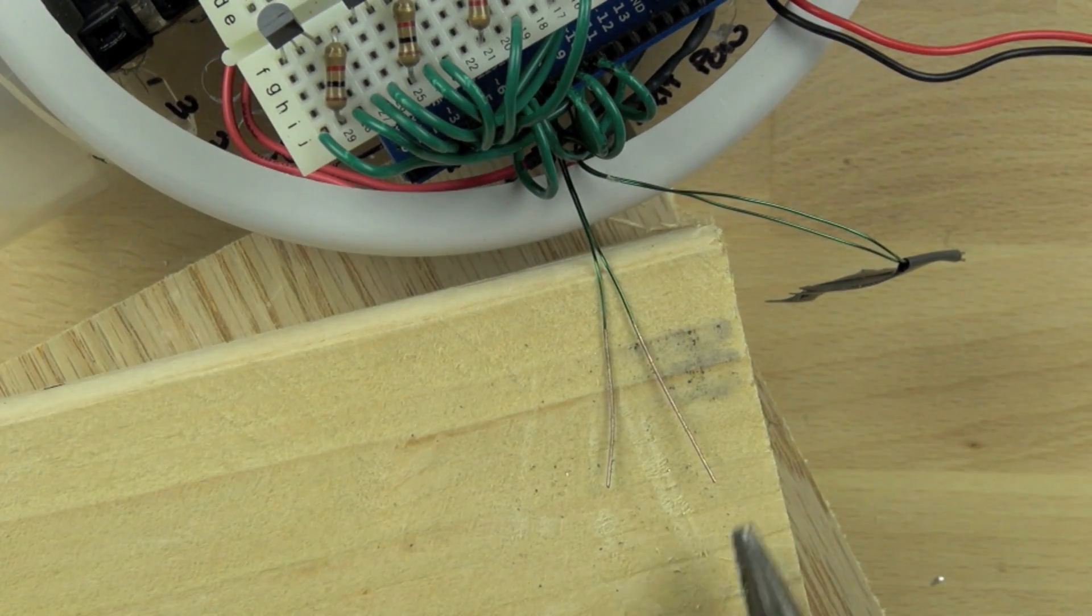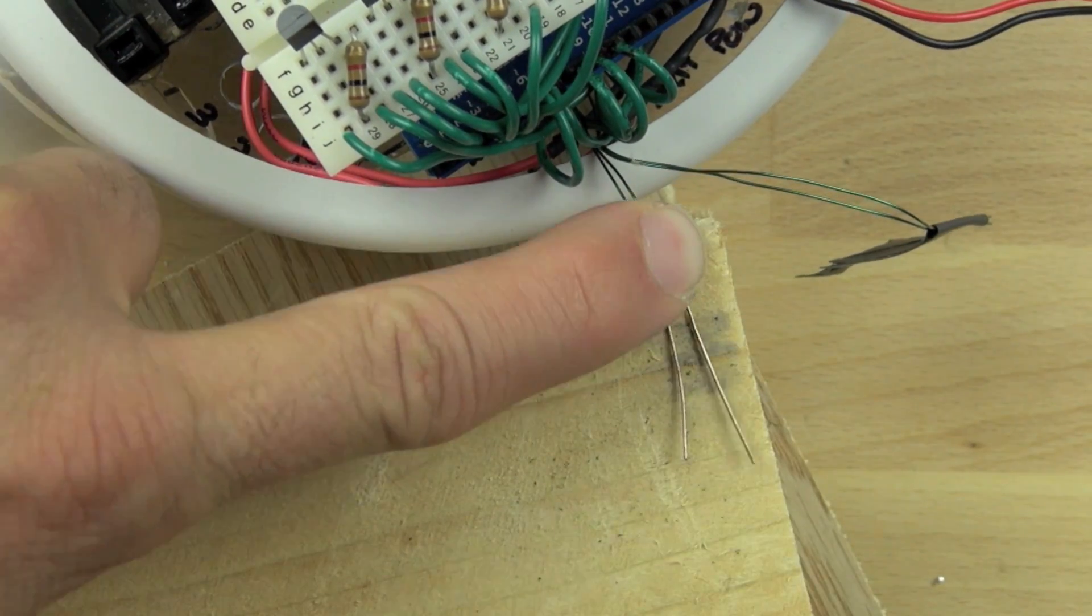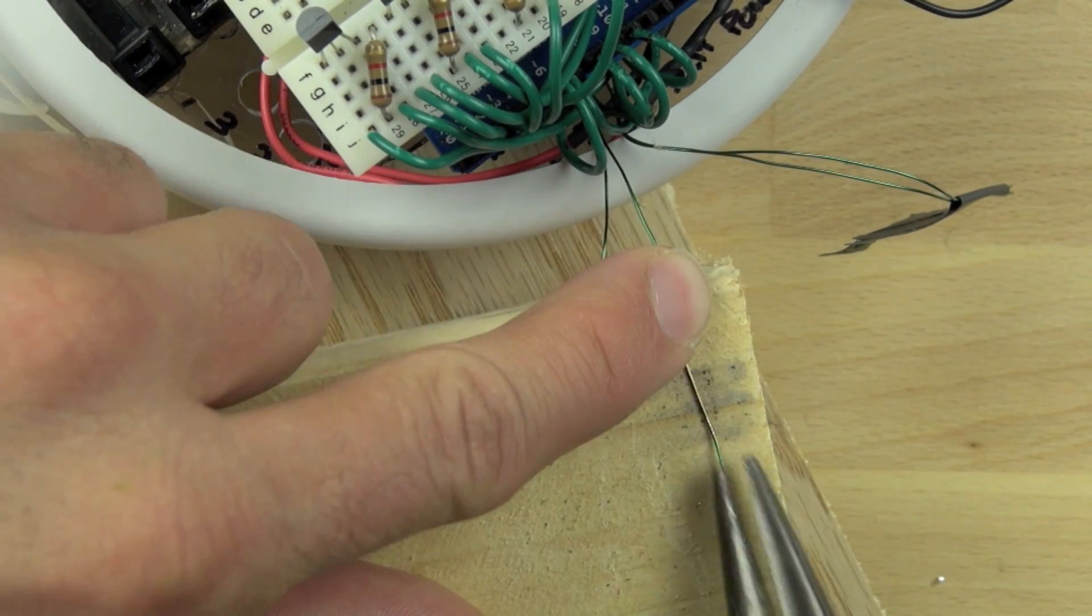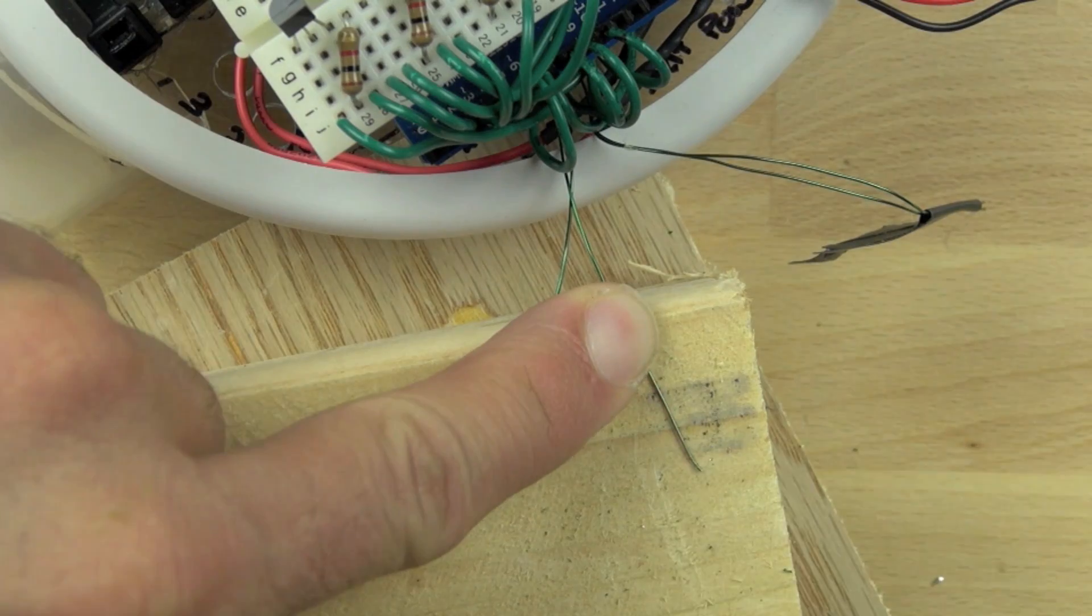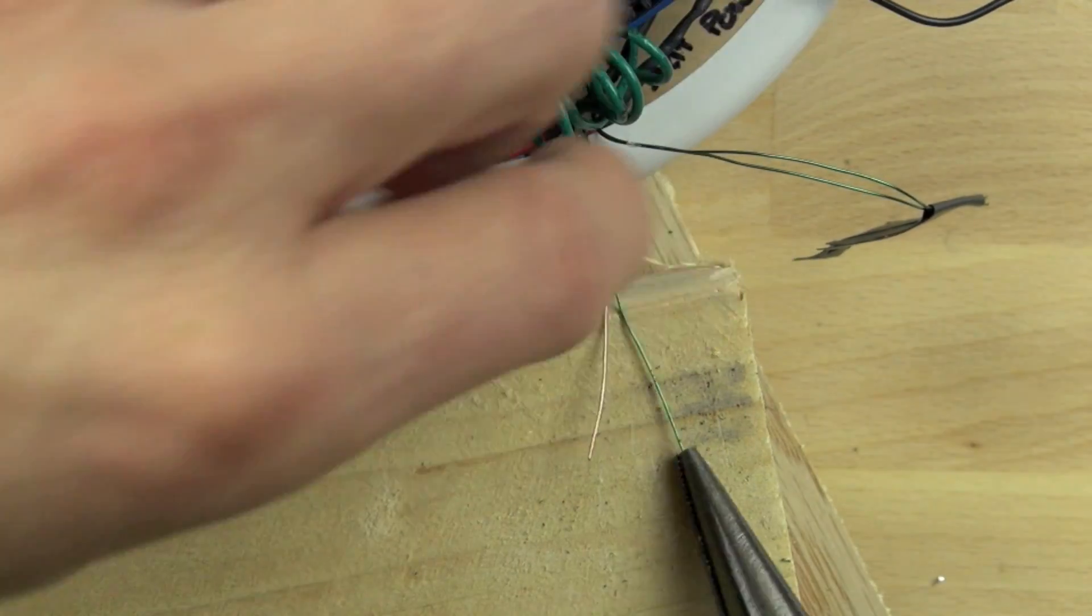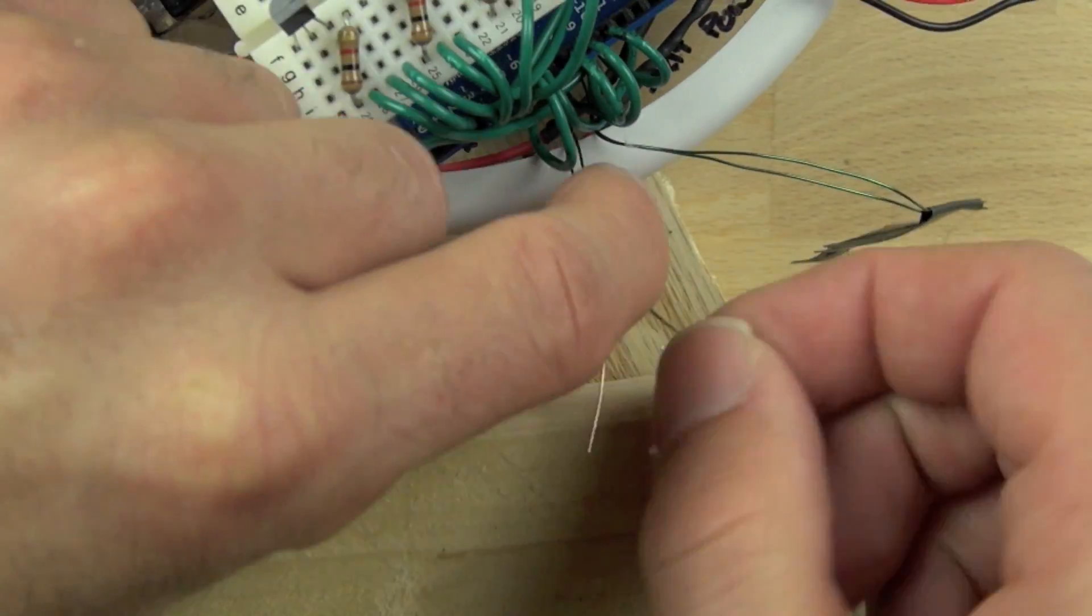It's important that you rotate the wire as you do this so that you can get the lacquer on the backside and on the edges. It's really easy to miss that, and you won't get as good a connection if you don't strip all the lacquer off.